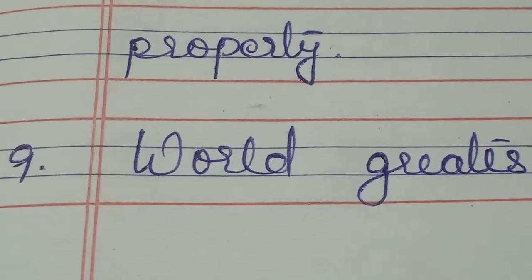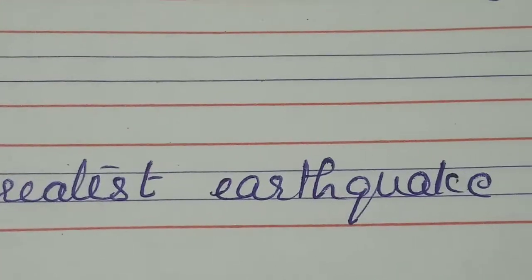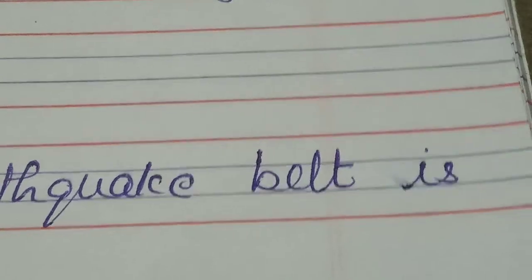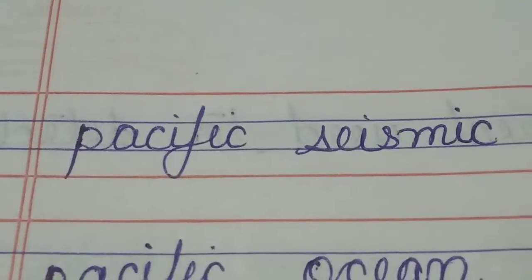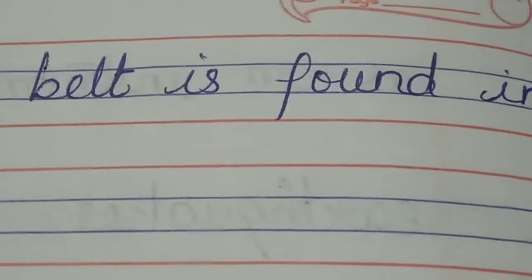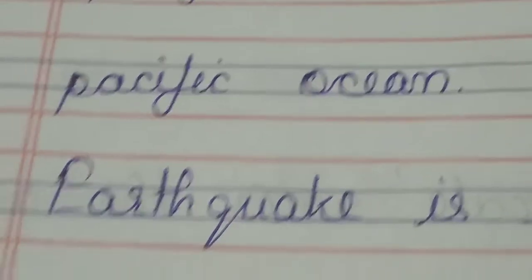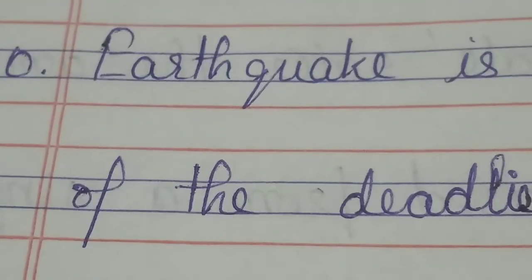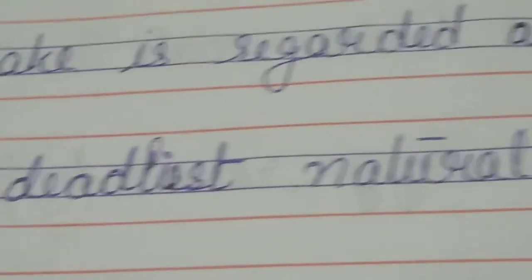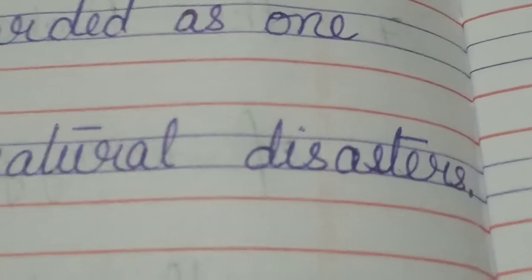World's greatest earthquake belt is Pacific Seismic Belt, found in Pacific Ocean. Earthquake is regarded as one of the deadliest natural disasters.